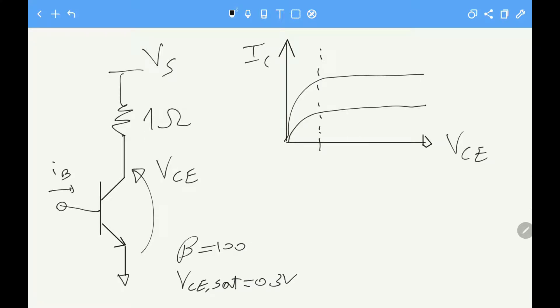Okay so I redrew our problem right here so we have our transistor, our 1 ohm resistor representing the light bulb, and our source voltage. And I told you that the transistor has current gain 100 and saturation voltage 0.3 volts. So that means that this point right here is 0.3 volts. And beta is 100 means that if IB is 10 milliamps, it means that I will have 1 amp here. Because 10 milliamps times 100 is 1 amp.